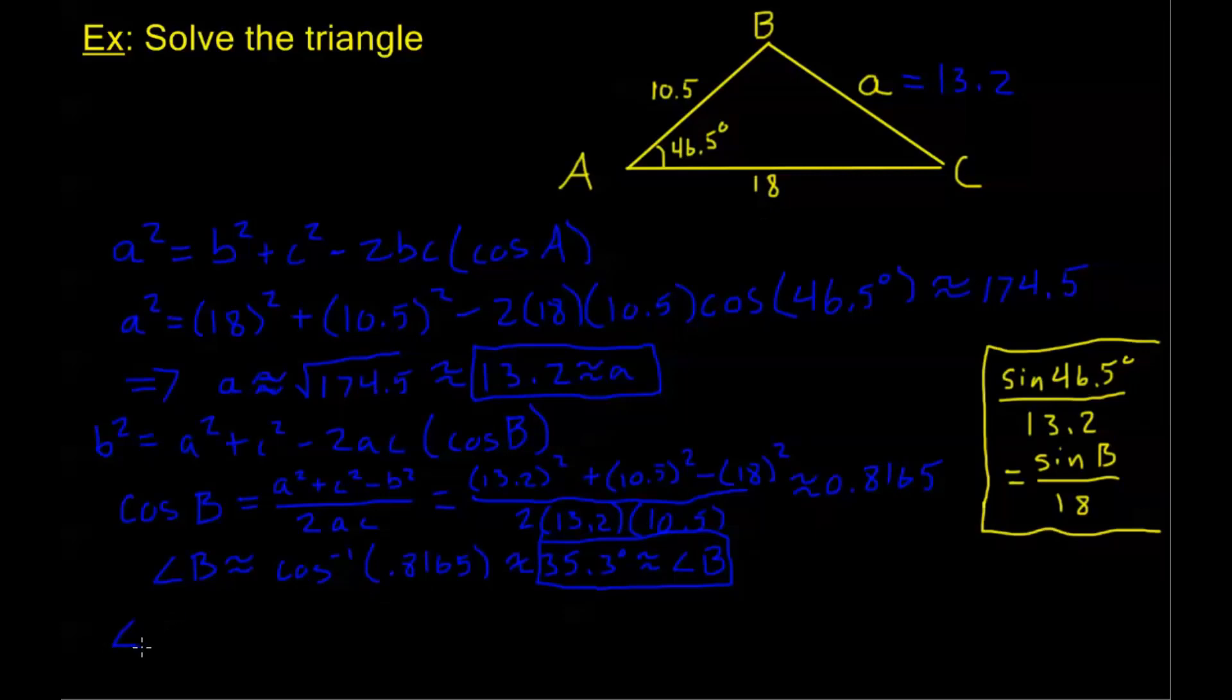And remember, once we have two angles, it's very easy. Angle C is going to be the total interior angle of the triangle, which is 180 degrees, minus the other two angles. So minus B which is 35.3 degrees, and minus A which is 46.5 degrees.